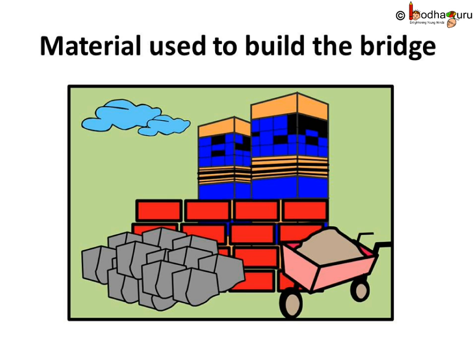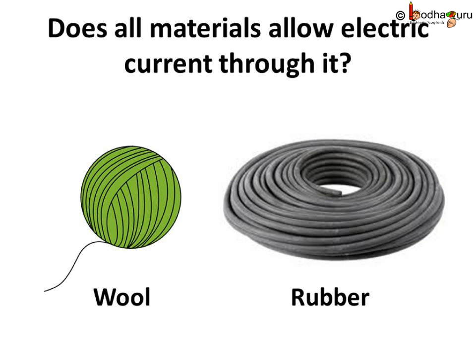Continuing with the same analogy, what is used to make bridges or roads for the buses to pass? Can we use bamboo or mud? No. We use cement, concrete, iron, etc. So all kinds of materials cannot be used to make a bridge or road that supports the flow of many heavy vehicles. Same way, what kinds of wire are used to pass electricity? Can we use a woollen string in place of electric wire? Or a rubber string? Let us find it out.